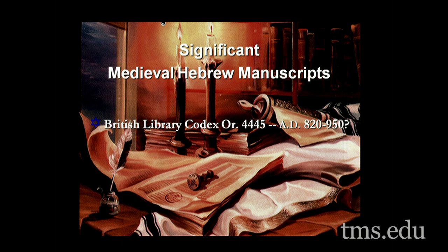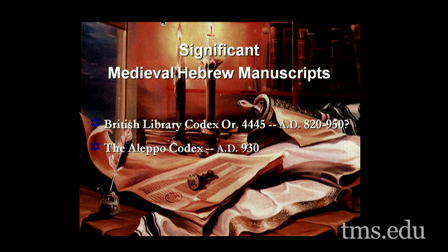The Aleppo Codex is one of the most famous of all the codexes. In 1948, during Arab uprisings in Aleppo, Syria, they burned down the Aleppo synagogue. Inside the synagogue was one of the oldest Hebrew manuscripts in the world. It was partially damaged in the fire — almost all of the Pentateuch was lost. All of Genesis, Exodus, Leviticus, Numbers, and a good portion of Deuteronomy was burned up in the fire.